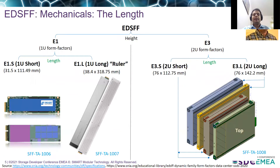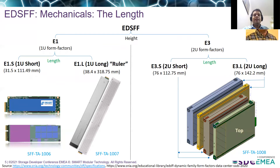Now let's look at another dimension — the length of these form factors. Both E1 and E3 form factors are further categorized into short and long lengths. The E1.S, or 1U short, is aimed at performance and its mechanical specification is defined in SFF-TA-1006. The E1.L, the longer version of the 1U form factor, is defined in SFF-TA-1007 and is known as the ruler form factor in the industry, mostly used in high-capacity or high-density SSDs.